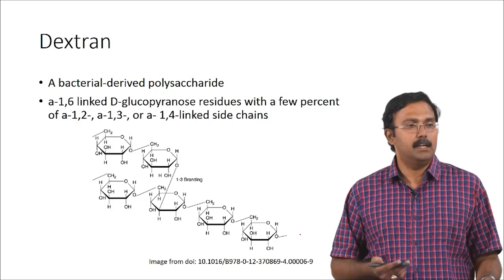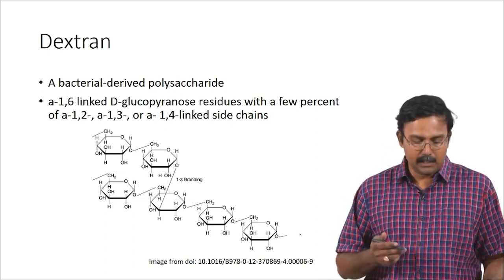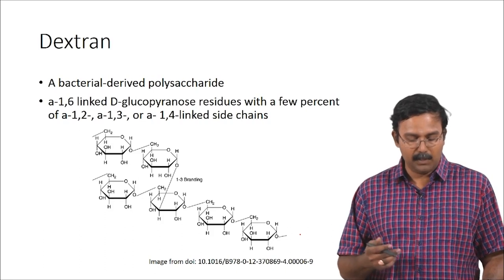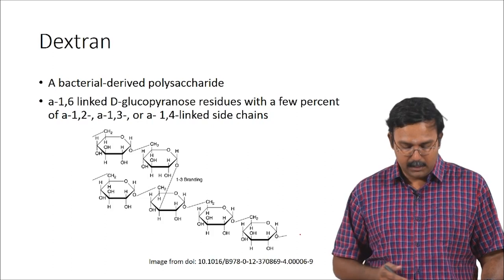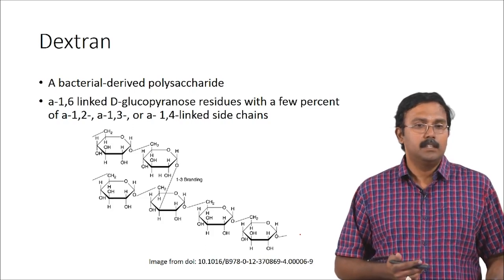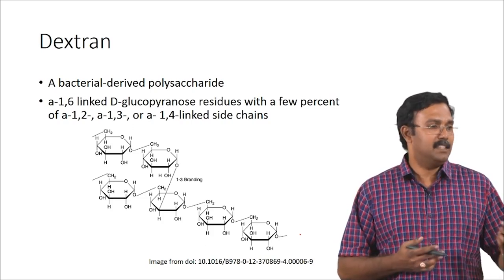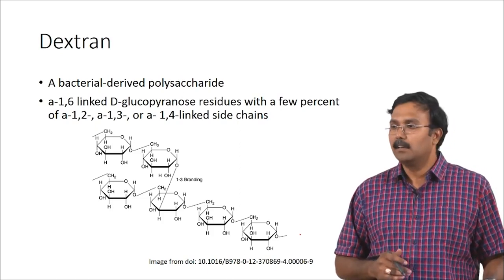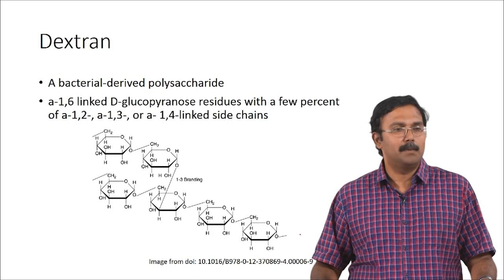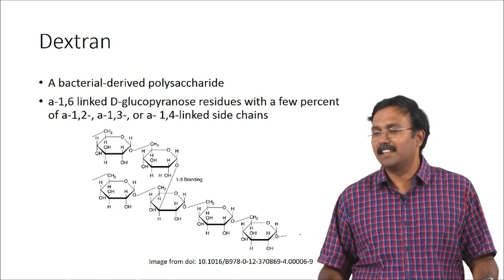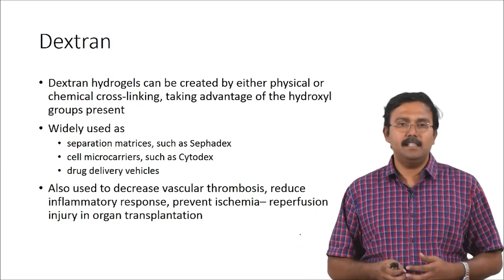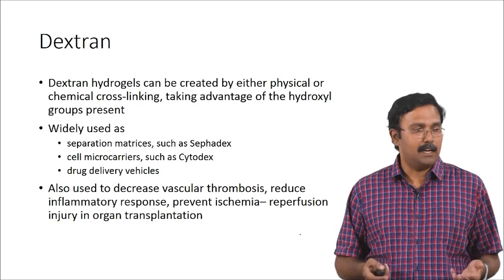Dextran is another bacterial-derived polysaccharide. It has alpha-1,6-linked D-glucopyranose residues with a small percentage of alpha-1,2, alpha-1,3, and alpha-1,4 linked side chains. Dextran is commonly used for different applications. Can you think of a common application where dextran is used? Not in a medical sense — something from an experiment you might have done. Protein purification? Sephadex — Sephadex is actually made of dextran.